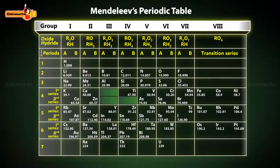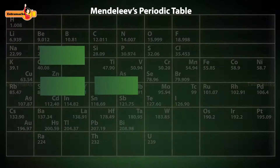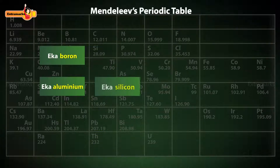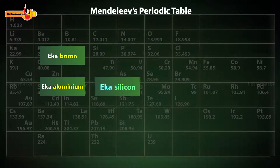Notice there are some gaps in his periodic table. He named these yet-to-be-discovered elements using a Sanskrit prefix 'Eka,' which means 'first,' and also predicted their properties. For example, Eka Boron, Eka Aluminium, and Eka Silicon.